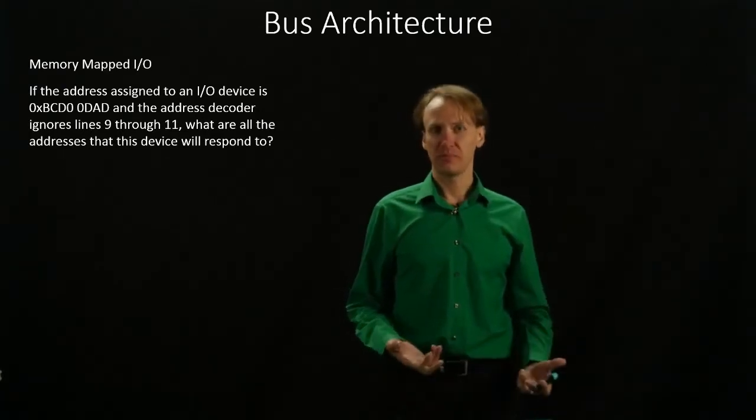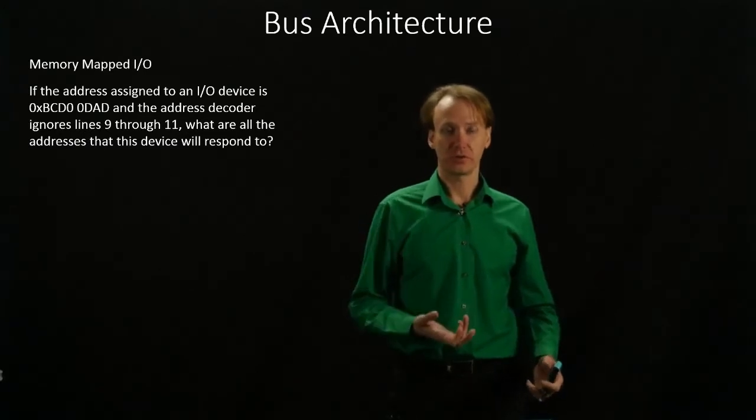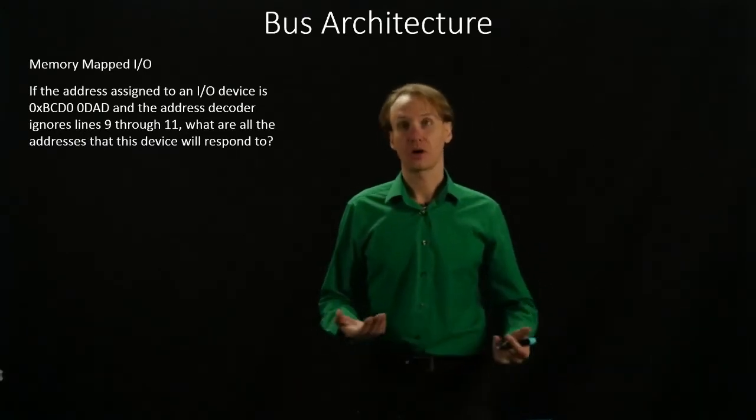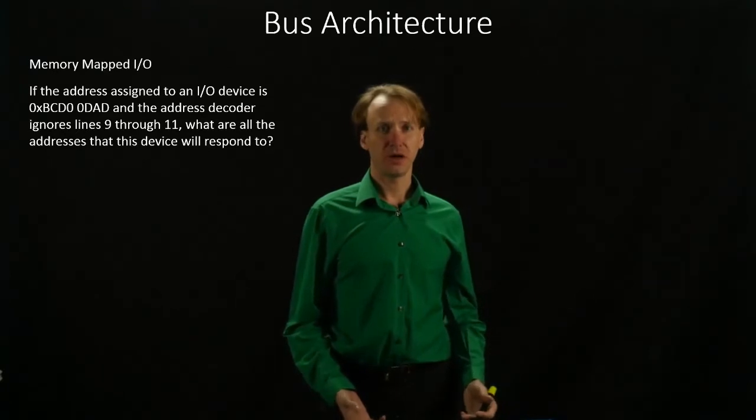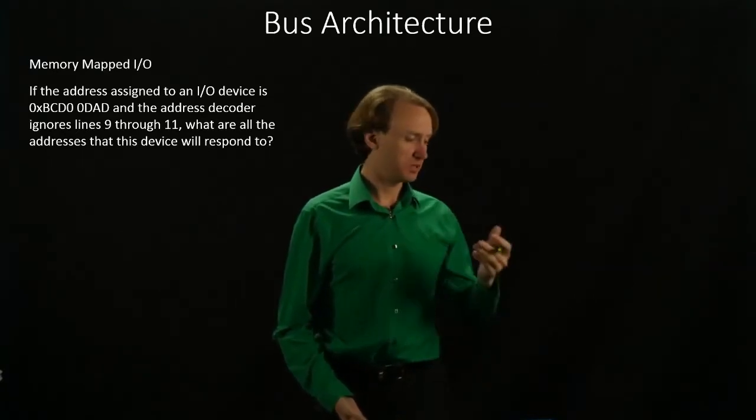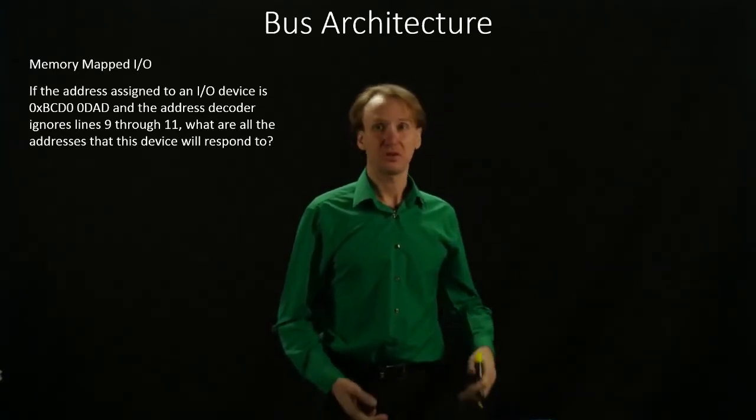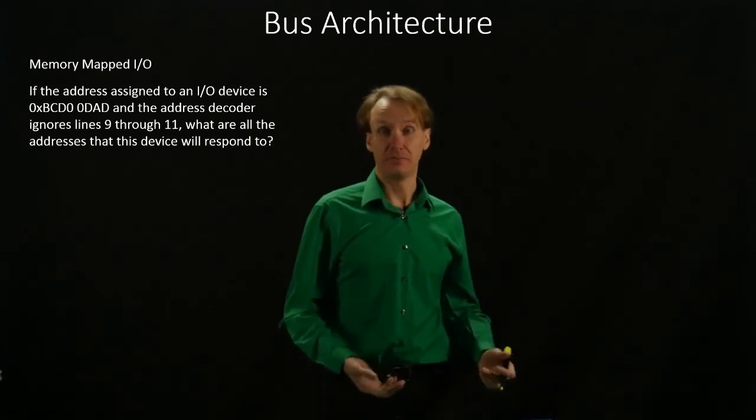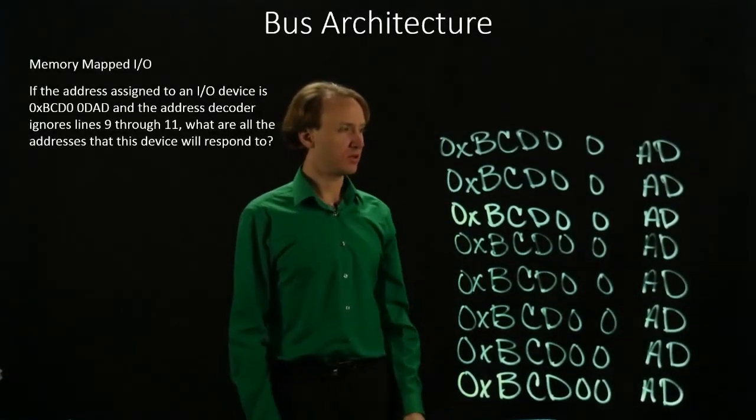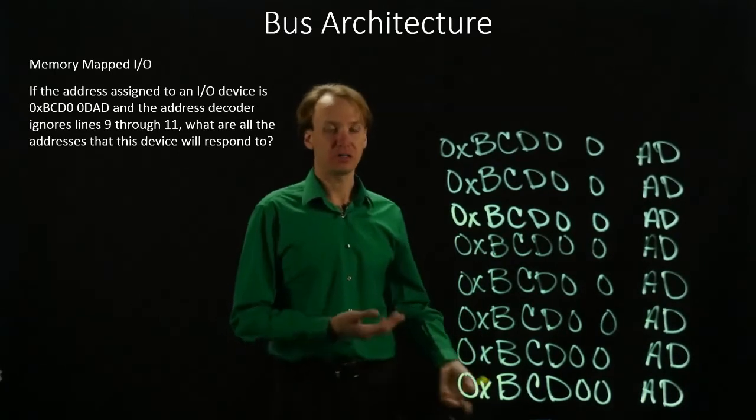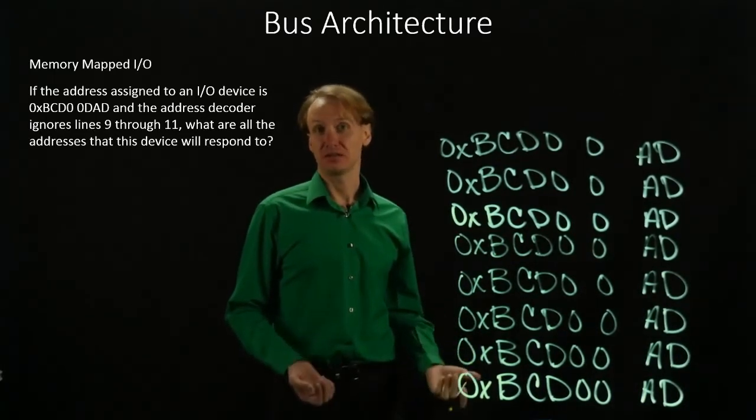This time though, since we have three bits, we will have 2 to the third possible combinations, or 8. So I'm going to begin by writing down eight different copies of bcdoodad, but I'm going to leave out that middle D. So this will give me the ability to write down all eight possible combinations that this device can listen to.